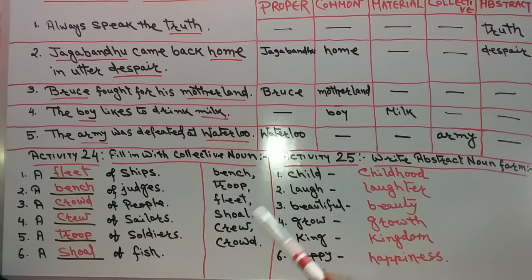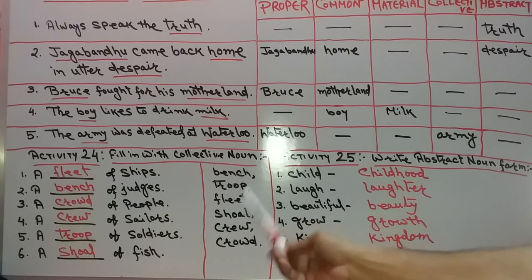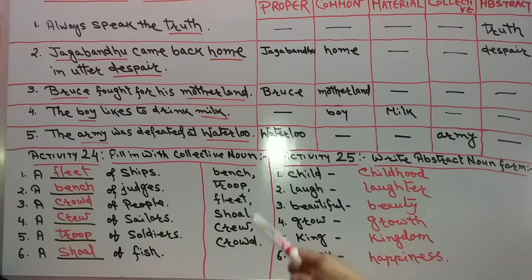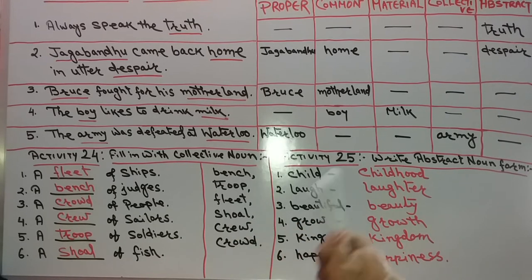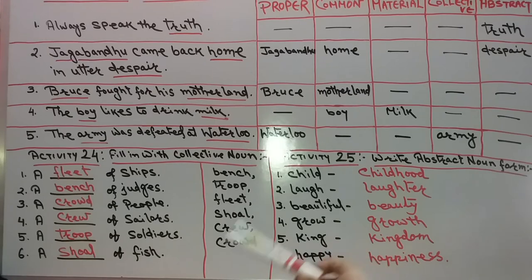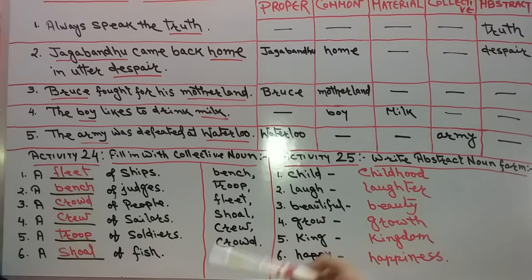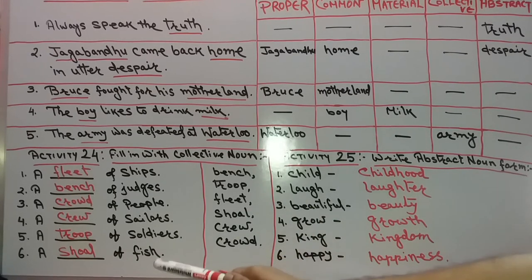Number 3: A crowd of people. Number 4: A crew of sailors. Sailors' group is called crew. Crew of sailors — sailors means nabik.